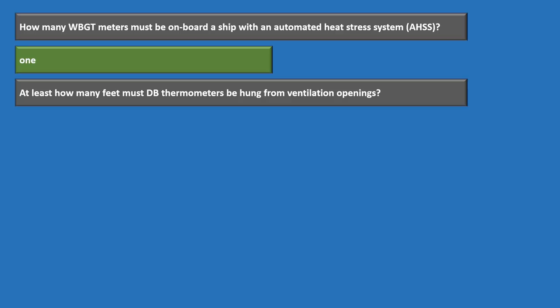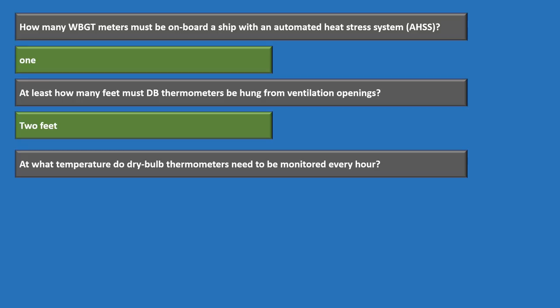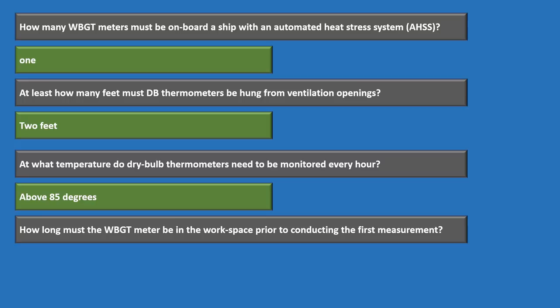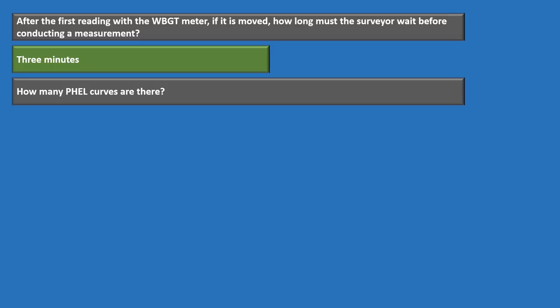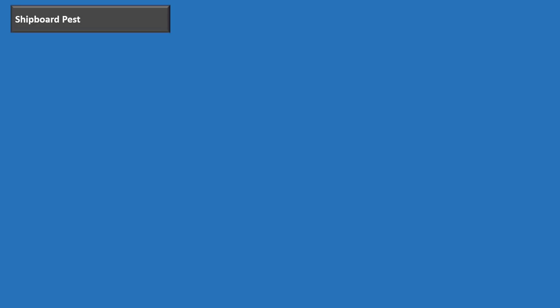Dry bulb temperatures must be monitored every hour when above 85 degrees. The WBGT meter must be in the workspace for five minutes before the first measurement. After the first reading, if the meter is moved within the same workspace, wait three minutes before the next measurement. There are six FELL curves. These questions come from OPNAV 5100.19.